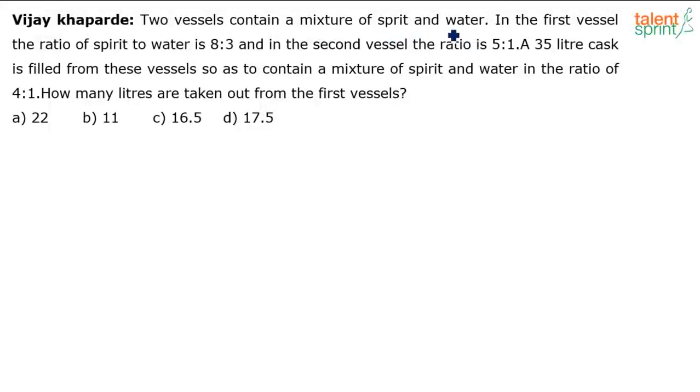Two vessels contain a mixture of spirit and water. There are two mixtures of spirit and water. In the first vessel, the ratio of spirit to water is 8:3, and in the second vessel, the ratio is 5:1. Now, there is a 35 liter container which is filled from these two vessels, so as to contain a mixture of spirit and water in the ratio of 4:1. How many liters are taken out from the first vessel?